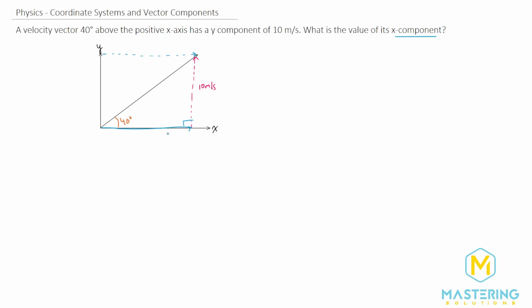So since we have a right triangle we can use trigonometry functions to find the value for the x-component. So there's a couple ways that we can go about this. There's this two-step method and a one-step method. I'll show you the two-step first and then we'll do the one-step afterwards.